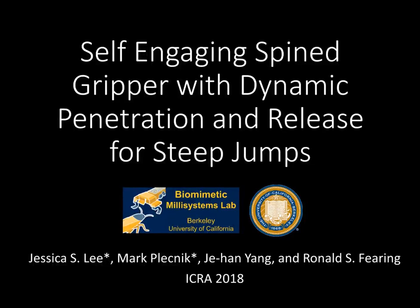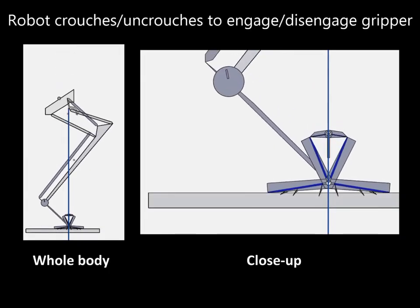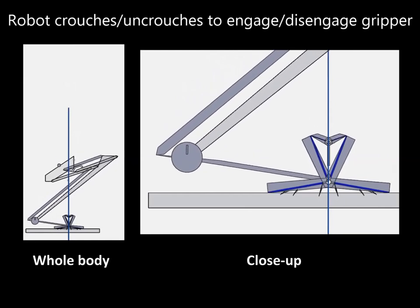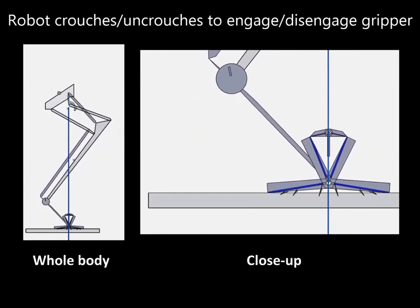Self-engaging spined gripper with dynamic penetration and release for steep jumps. As the robot crouches, it engages the gripper, as seen on the right, and as it uncrouches, the gripper disengages.